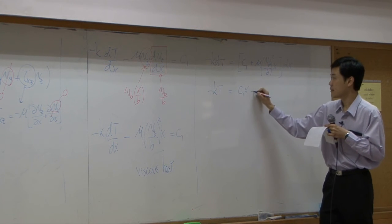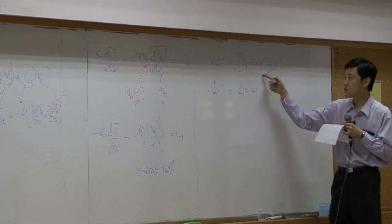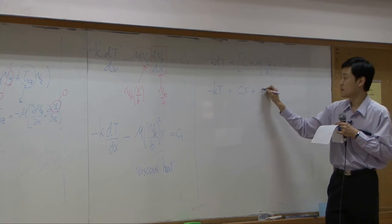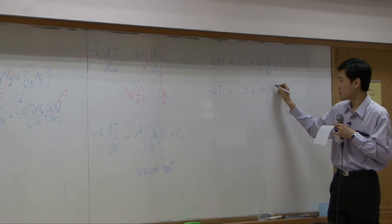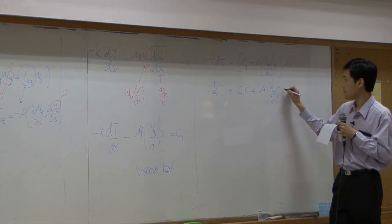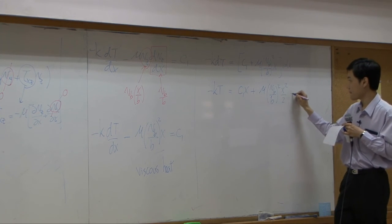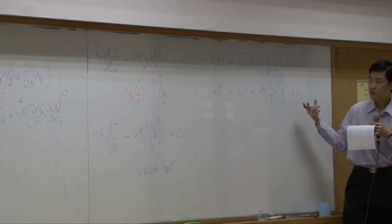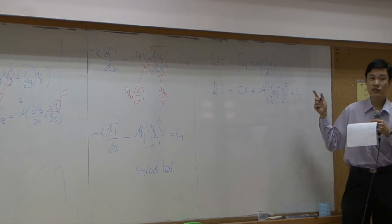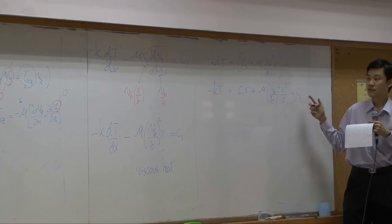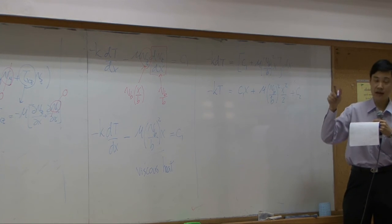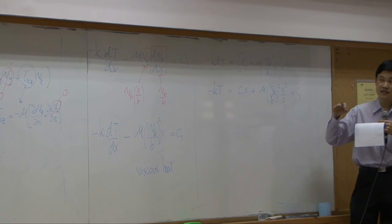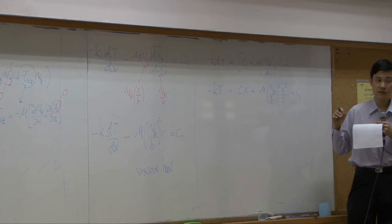Plus, although this one looks complicated, but all of them are simply constant. So, integrated, is no problem. Plus, another constant c2. So, if you do like this, you should see that we need two boundary conditions. That means, you need to know temperature at two points in our system. And we do. We do know temperature at x equal to zero, and x equal to b.